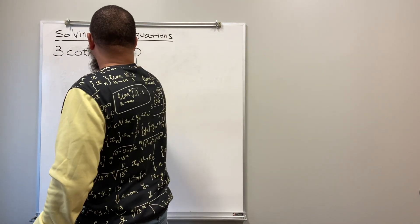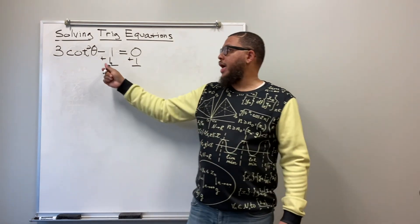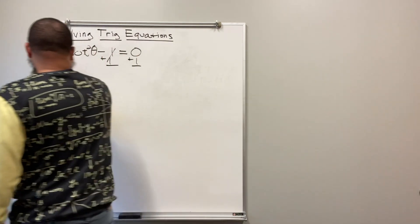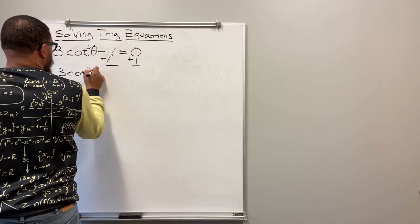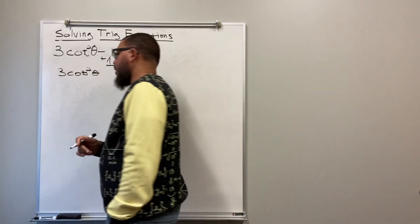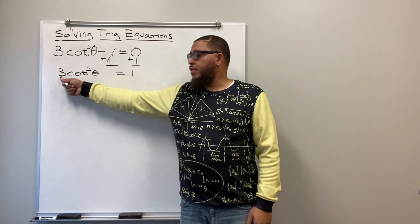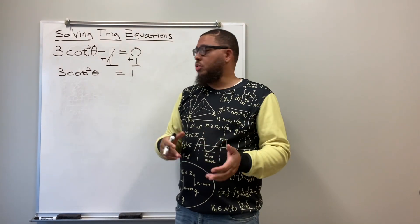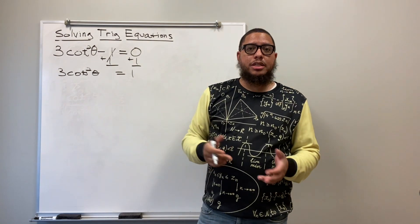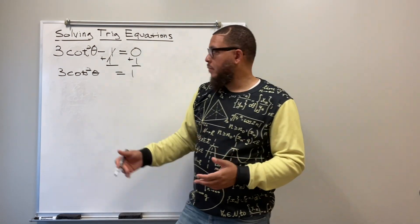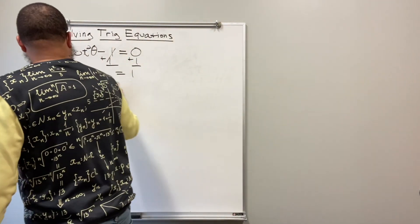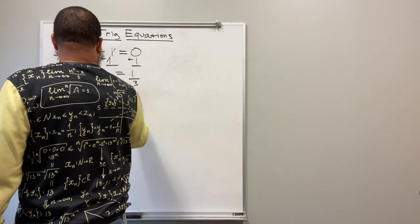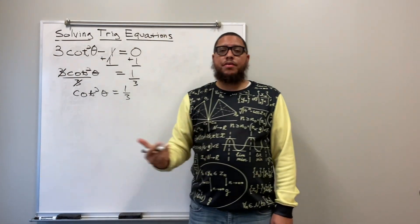Add one to both sides to keep the equation balanced — these ones cancel out, leaving three cotangent squared of theta equals one. Next, I want to get rid of the three. Since three is being multiplied by cotangent squared of theta, the inverse of multiplication is division. So I divide both sides by three. The threes cancel out, leaving cotangent squared of theta equals one third.